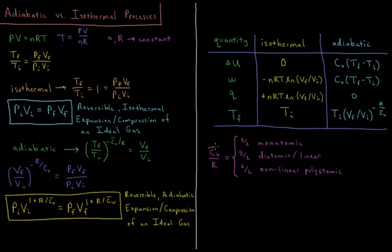We need to account for what type of ideal gas we're dealing with to get our constant volume molar heat capacity CV̄, which is the partial derivative of internal energy with respect to temperature at constant volume, divided by the number of moles. CV̄/R equals 3/2 for a monatomic ideal gas, 5/2 for a diatomic or linear ideal gas, and 6/2 (or 3) for a nonlinear polyatomic molecule.